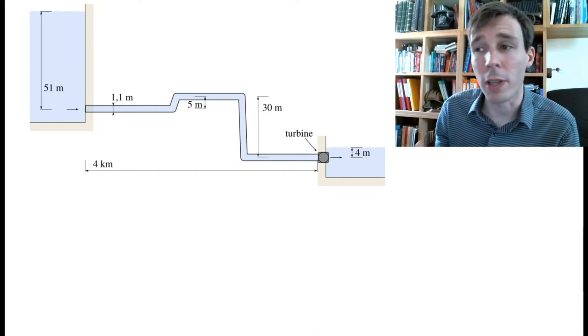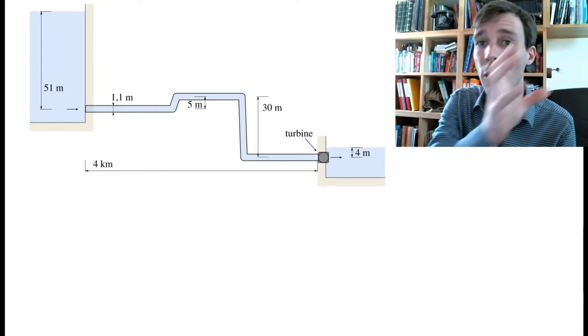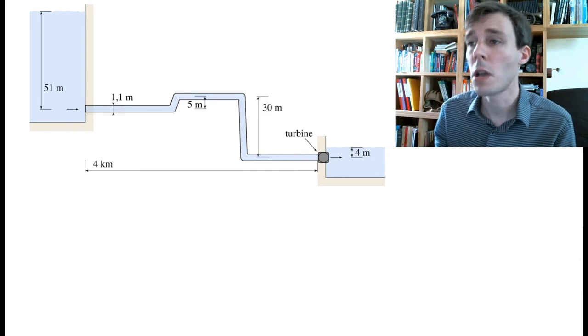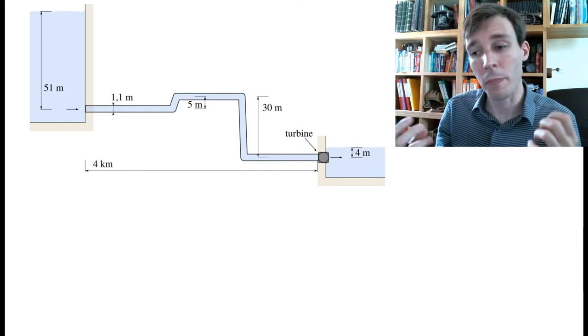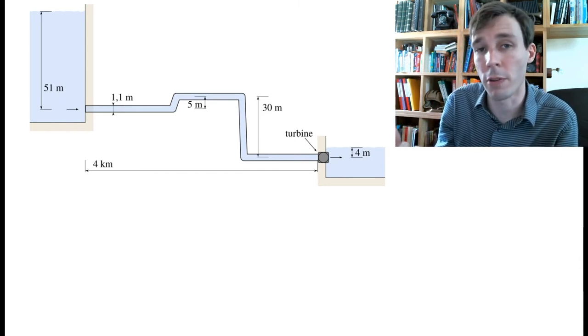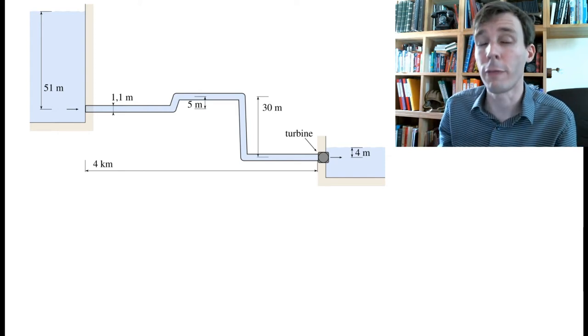In this problem we are preparing to run a turbine by flowing water from one tank to the other, and we want to calculate the hydrostatic pressure difference that is available for the turbine to run.